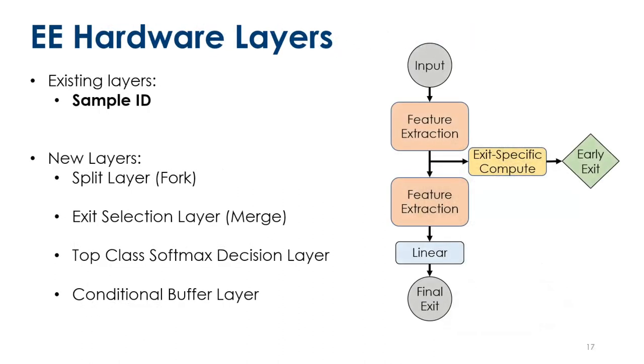First, the first change we had to make: a lot of the existing layers inside fpgaConvNet, there's no concept of distinct samples in a continuous stream of incoming data. We have to augment the existing layers with this sample ID so that if a latest sample overtakes an earlier sample, you're able to match up the classification result with the initial image. We added some new templated hardware layers to the standard CNN.